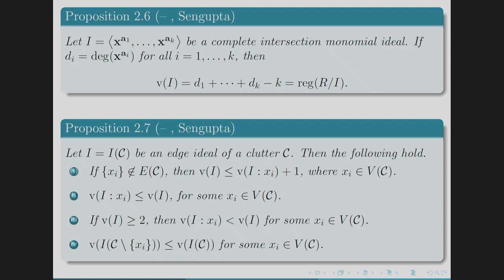For an edge ideal I = I(C) of a clutter, if x_i does not appear as a single variable in the generating set, then V(I) ≤ V(I colon x_i) + 1. Also, V(I colon x_i) ≤ V(I) for some x_i. If V(I) ≥ 2 then V(I colon x_i) < V(I) for some x_i, and V(I(C minus x_i)) ≤ V(I(C)) for some x_i in V(C).